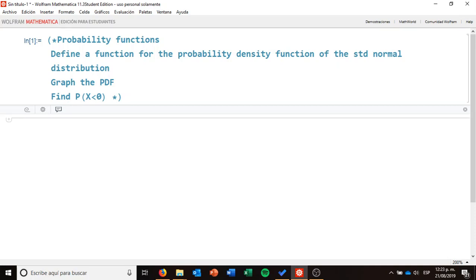We're going to solve the following three exercises. First, to define a function for the probability density function, or PDF, of the standard normal distribution and normal with mean of zero and variance of one. Then to graph that probability density function, or PDF, and finally, to find the probability of x being less than zero. So here it goes.